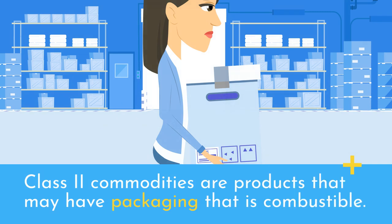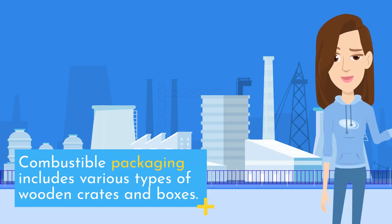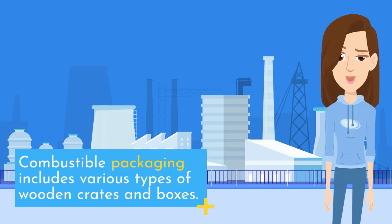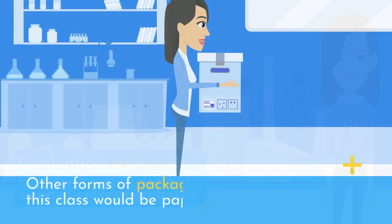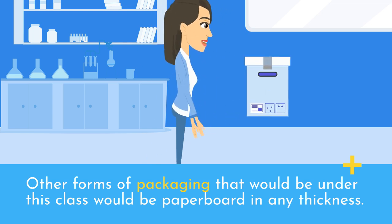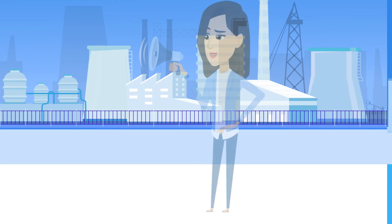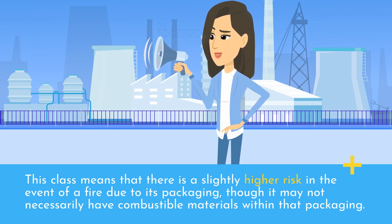Class II commodities are products that may have packaging that is combustible. Combustible packaging includes various types of wooden crates and boxes. Other forms of packaging under this class would be paperboard in any thickness. This class means there is a slightly higher fire risk due to its packaging, though the materials within may not necessarily be combustible.